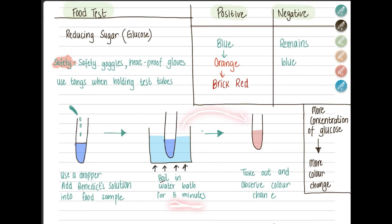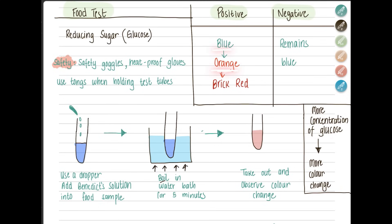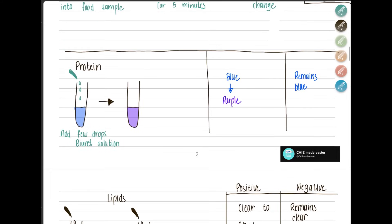After heating for five minutes, take out the test tube and observe the color change. If the color changes from blue to orange to brick red, that's a positive result — reducing sugar is present. One example is glucose. Note that higher concentration of glucose gives a stronger color change: low concentration may only turn orange, higher concentration turns brick red. If negative, it remains blue. For safety: wear safety goggles, heat-proof gloves, and use tongs when handling the test tube.